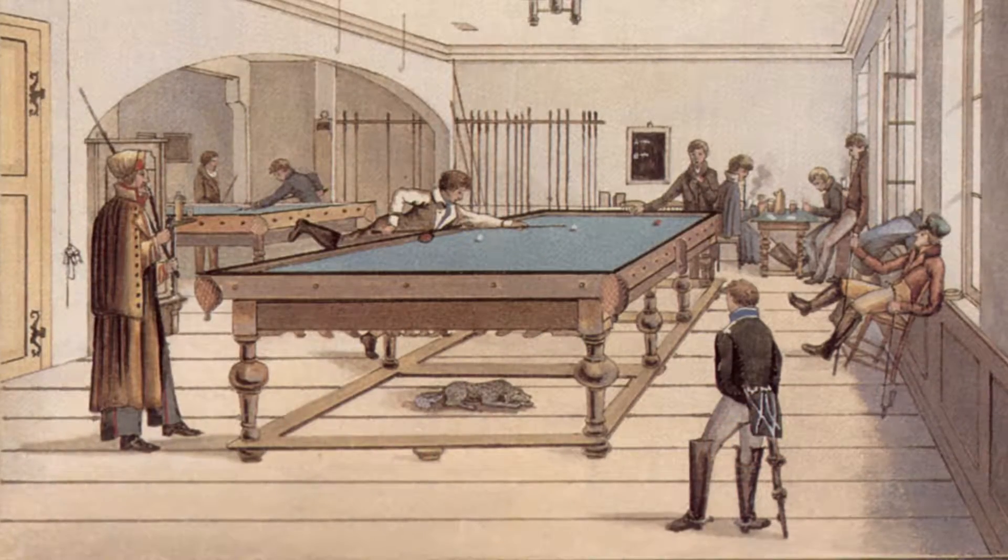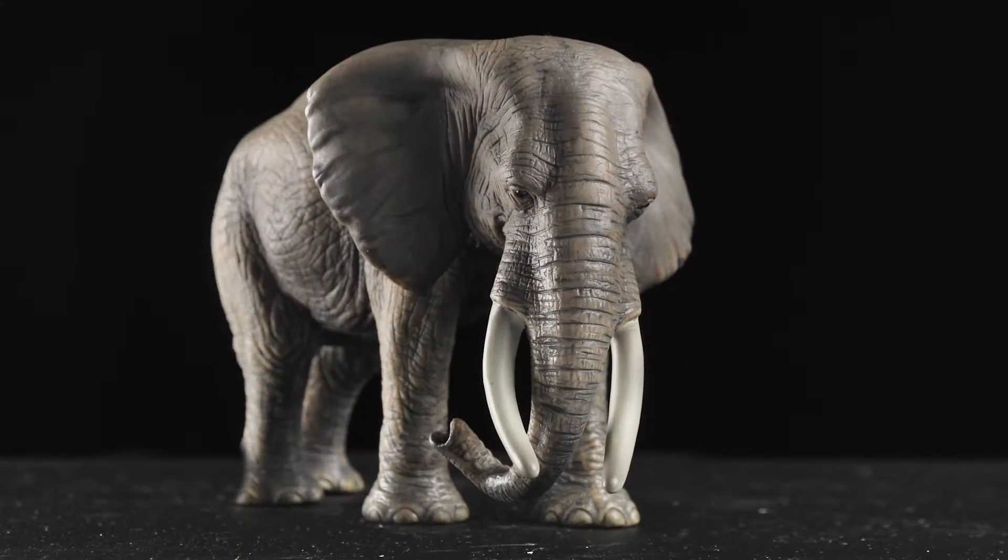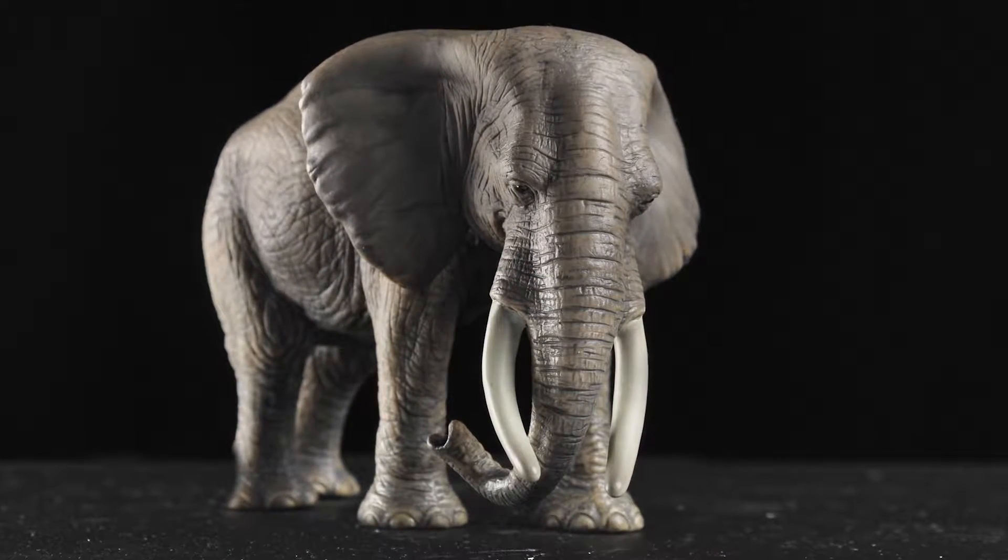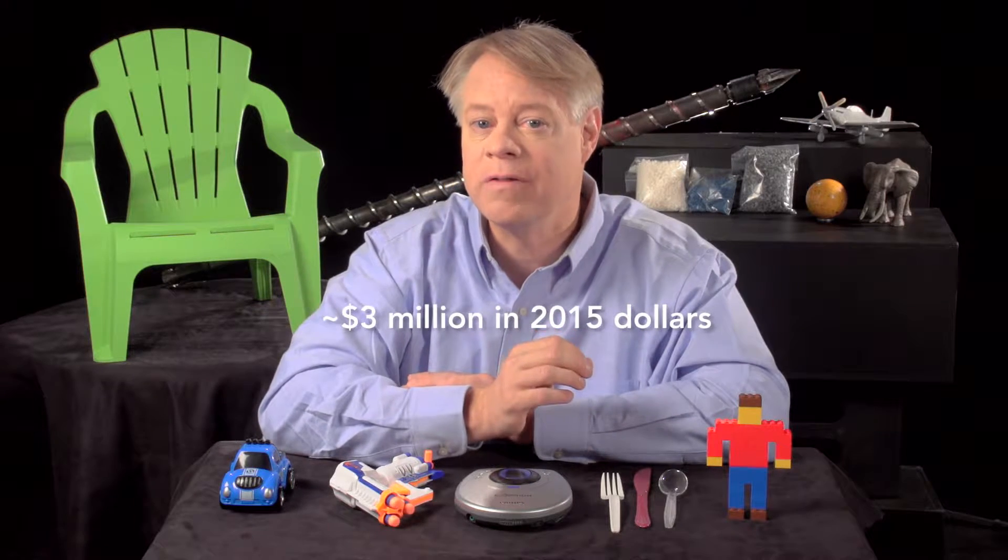Injection molding was invented to solve a problem for billiards. In the 19th century, billiard balls were composed of ivory harvested from the tusks of African elephants. This devastated the elephant population, so a billiards manufacturer offered a $10,000 prize for a replacement for ivory.